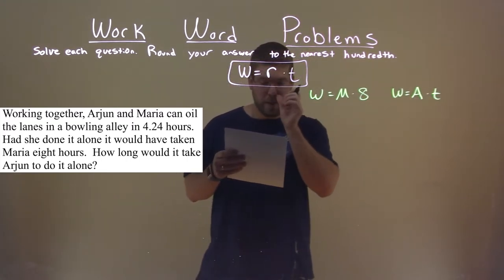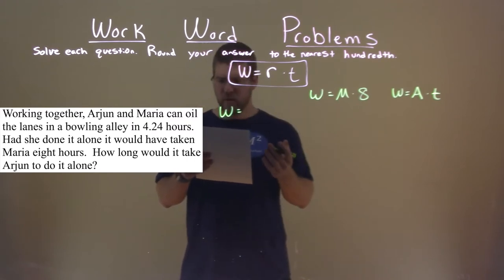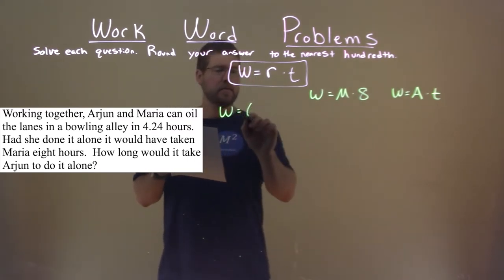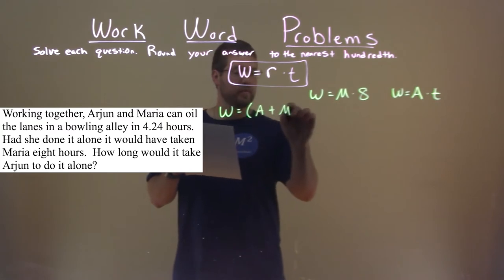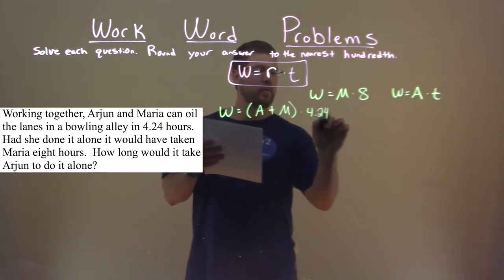The first thing they give us here though is what happens when they did it together. So that same work, again, oiling the lanes of a bowling alley, is equal to Arjun's rate plus Maria's rate times the time of 4.24 hours.